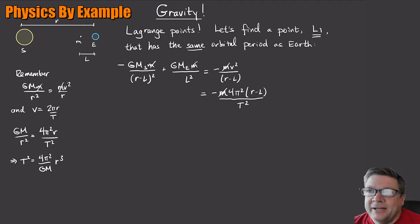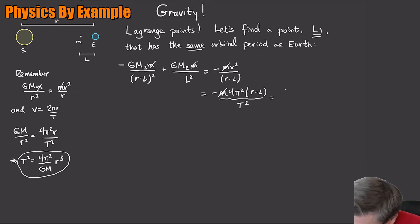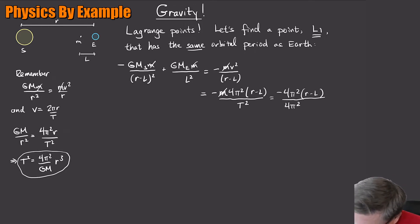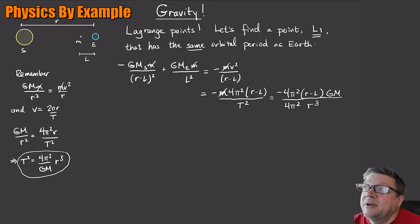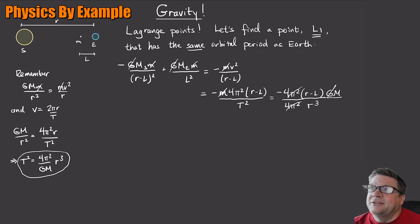The key trick: we want this mass to have the same orbital period as Earth, so it stays in the same relative position. That means the T squared in the denominator is just Earth's period squared — which from Kepler's third law is 4π²R³ over GM_S. Substituting, the 4π² cancels and so does GM_S, making things much simpler.